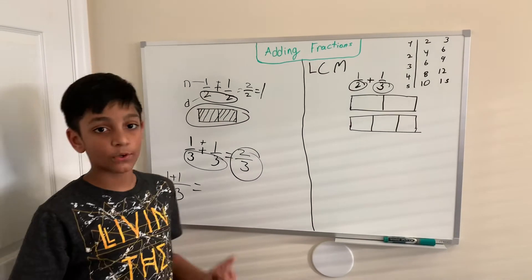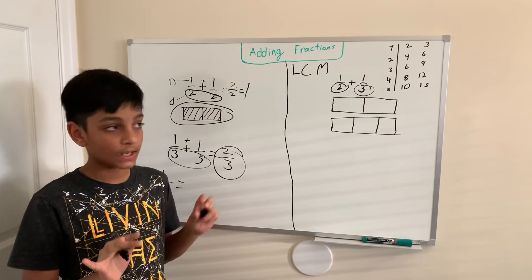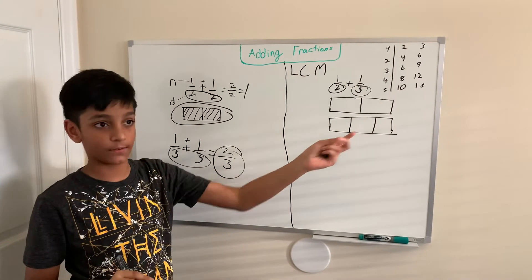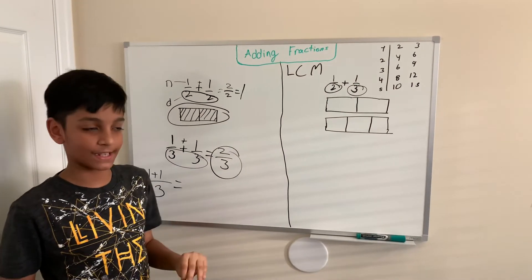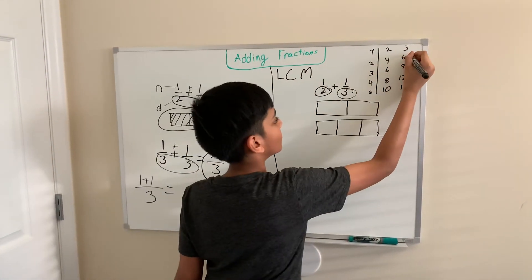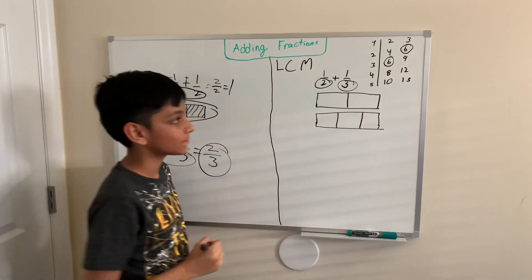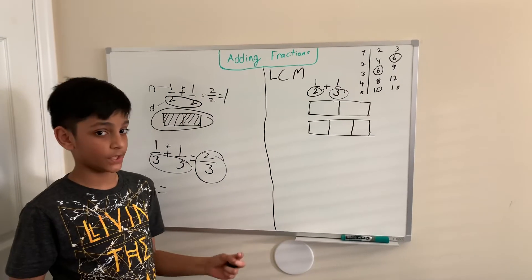We need to look for the least common multiple, which means we have to look for the smallest number that these two numbers, 3 and 2, have the same. I can see that they have 6 and 6. So, that's what our denominator is going to be, 6.